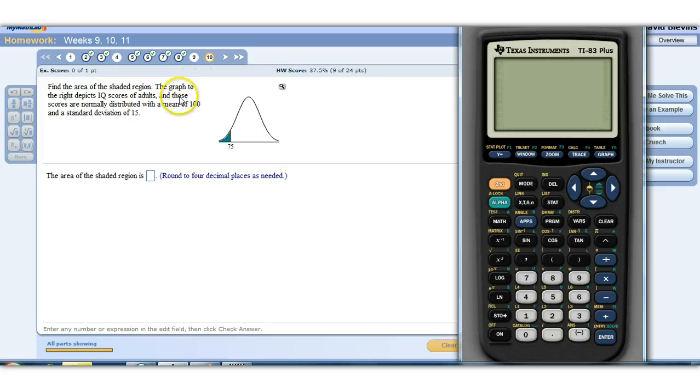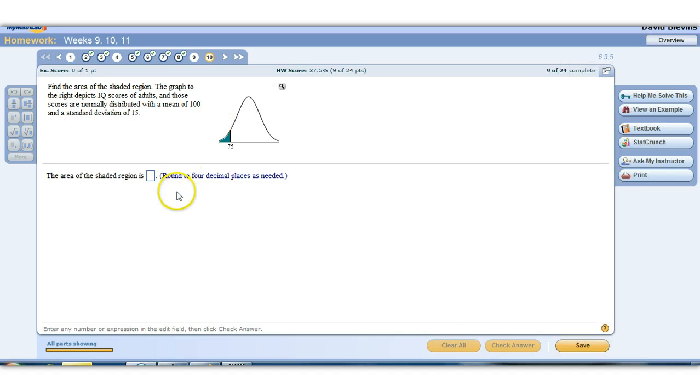Alright, this particular video is a little bit different than what we've been doing, not much at all though. This is no longer the standard normal distribution, this is just a normal distribution. We've talked about how IQ scores are normally distributed. These have a mean of 100 and a standard deviation of 15.